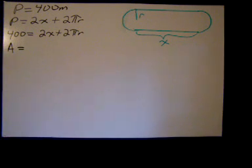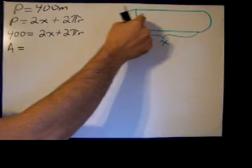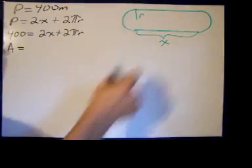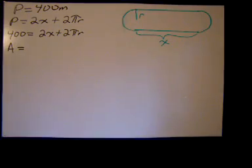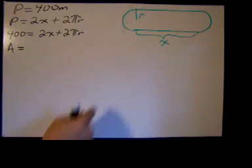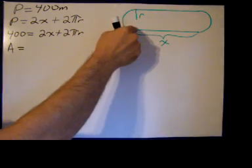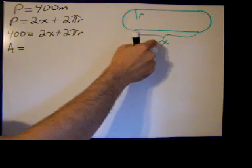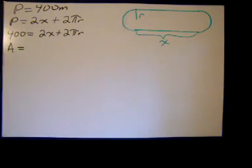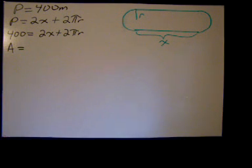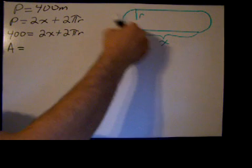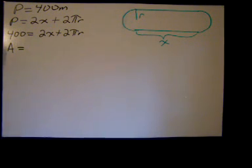Now if we don't read this problem carefully we might think the area equals the area of this semicircle plus the area of this rectangle plus the area of this semicircle, which would be an area of a circle pi r squared plus the length of this side which is 2r times the length of this side which is x. But that would maximize the area of the whole region.